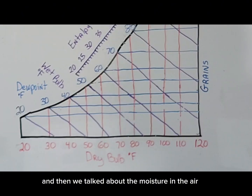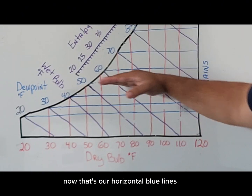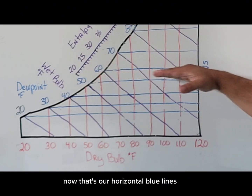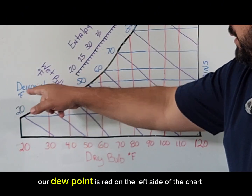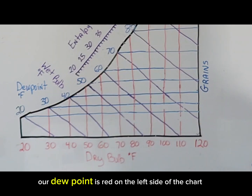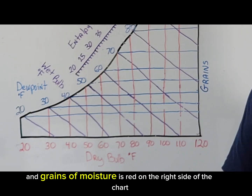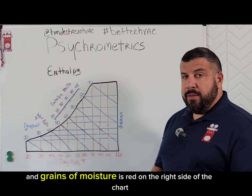And then we talked about the moisture in the air. Now that's our horizontal blue lines. Our dew point is red on the left side of the chart, and grains of moisture is red on the right side of the chart.